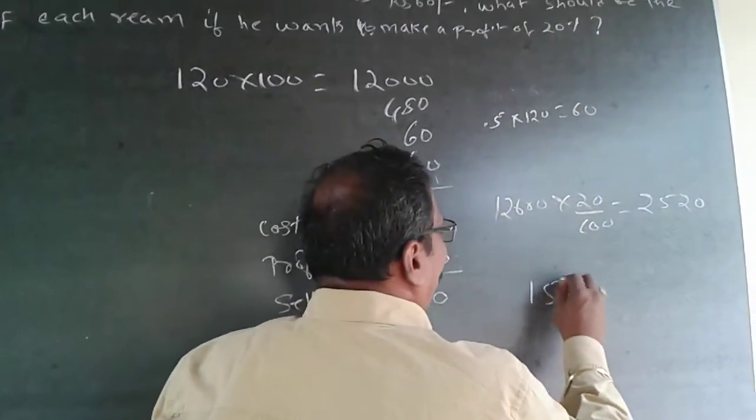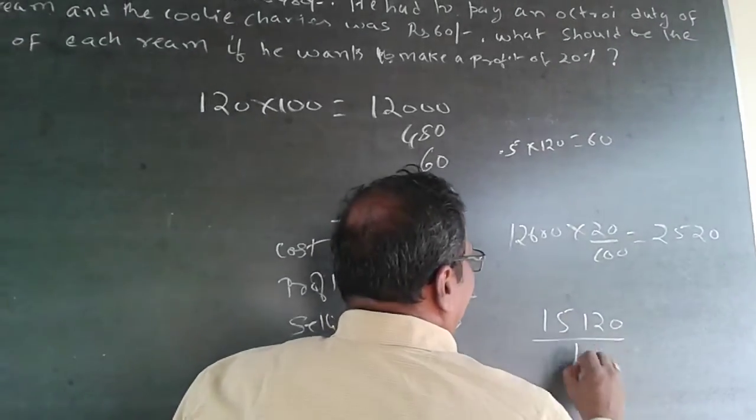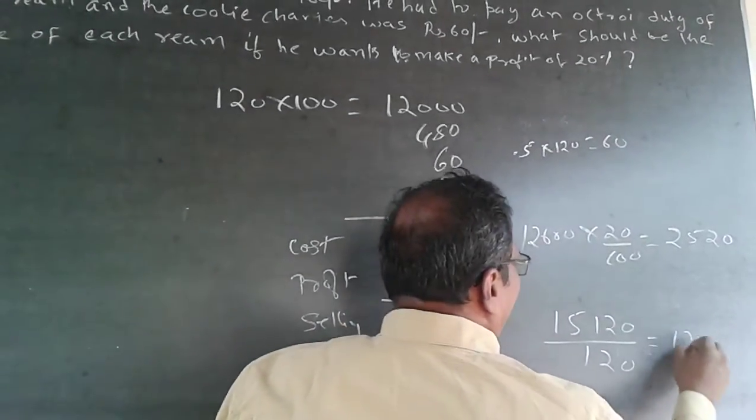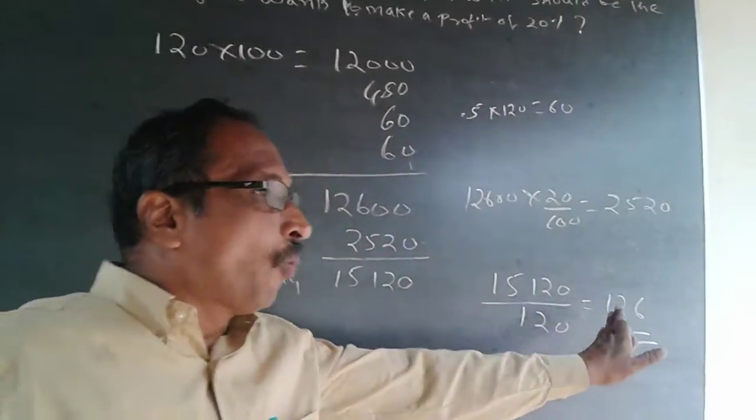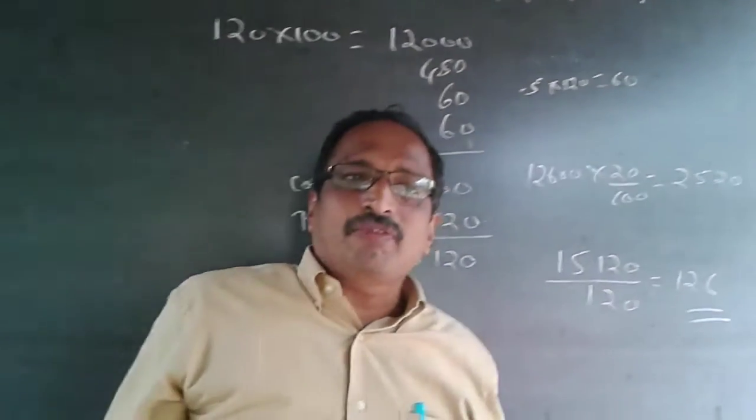So 15,120, there are totally 120 reams, so divided by 120 will be equal to 126. The answer is 126. This is the way of doing it.